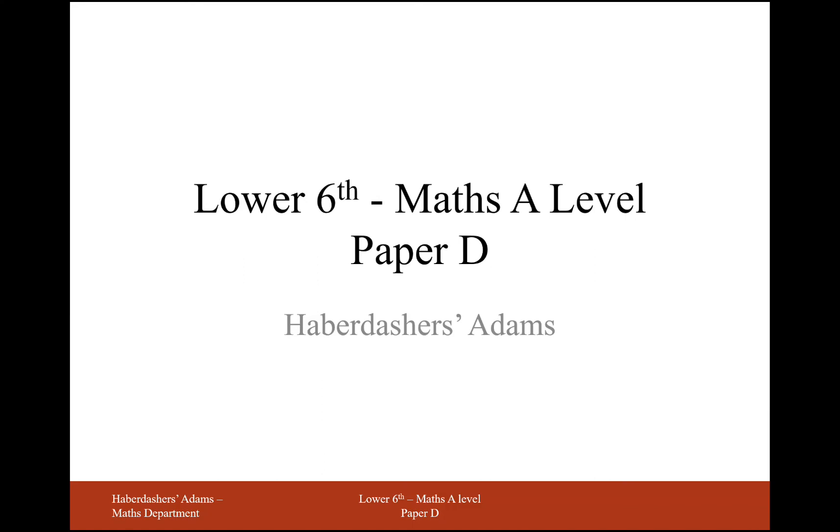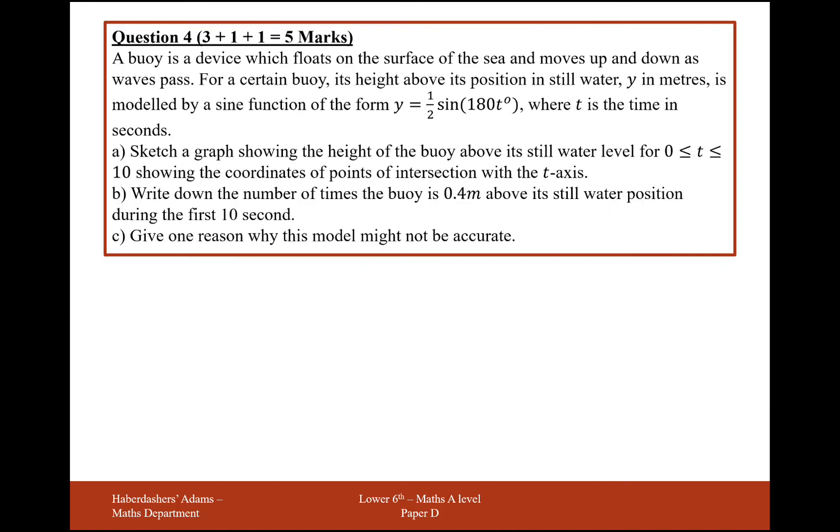Hello there and welcome to lower 6 maths A level practice paper D, and here we're working on question 4. A buoy is a device which floats on the surface of the sea and moves up and down when the waves pass. For a certain buoy, its height above a position in still water, y in meters, is modeled by the sine function of the form y equals a half sine 180t, where t is the time in seconds.